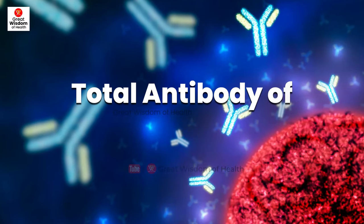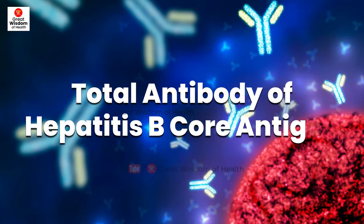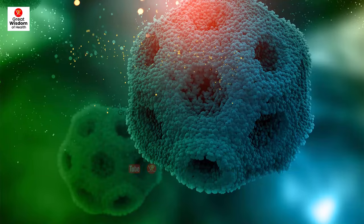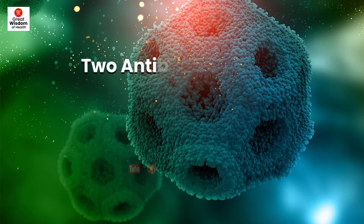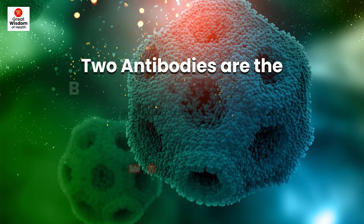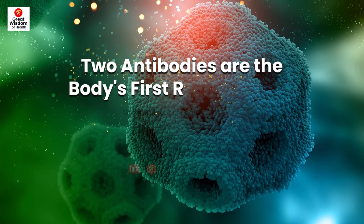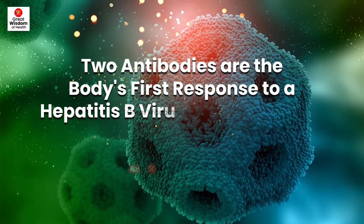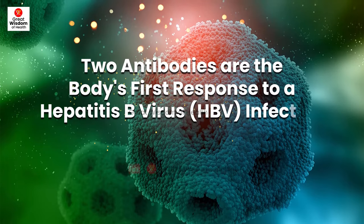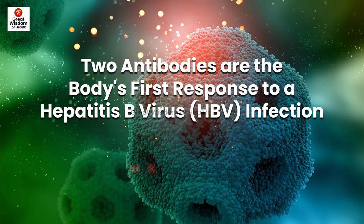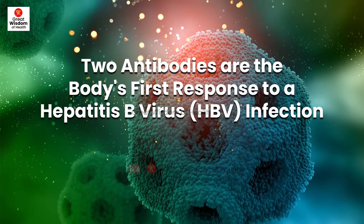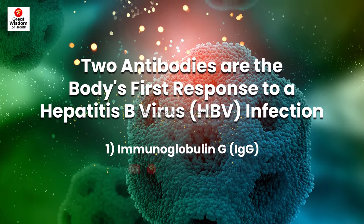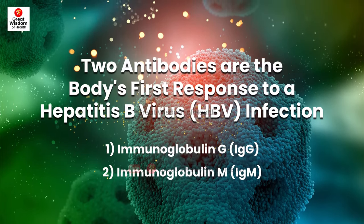Total antibody of hepatitis B core antigen, or anti-HBc. There are various antibodies found in the human body. Out of those, two antibodies are the body's first response to a hepatitis B virus infection. These antibodies are directed against a portion of the HBV called the core: one, immunoglobulin G; two, immunoglobulin M.